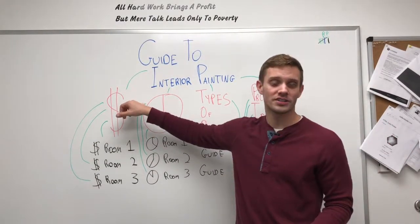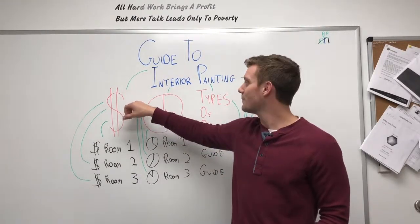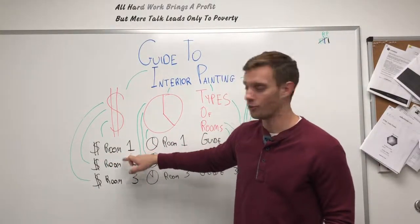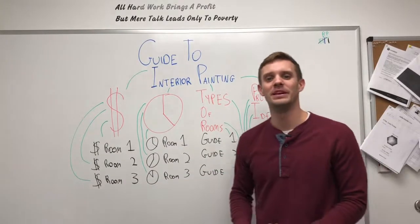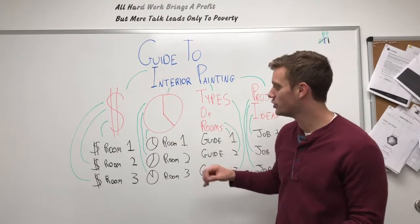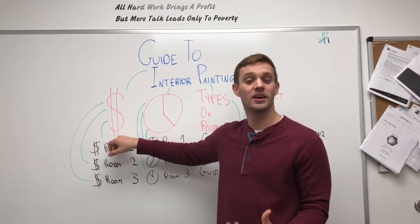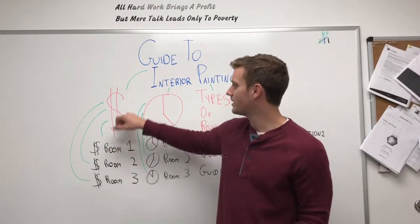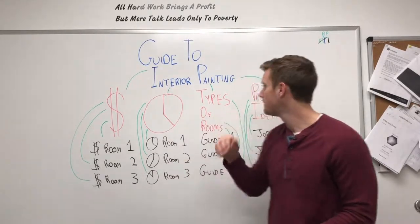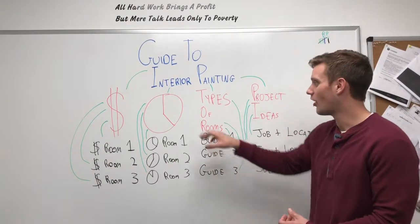From there, you can expand on each topic. For cost, you write a separate blog on the cost of painting a bedroom, another room, and another room — three different blogs about costs of various rooms that all tie back to the cost paragraph in your main guide. That's where backlinks come in again.